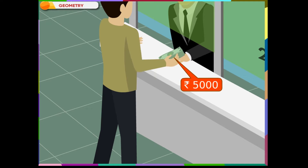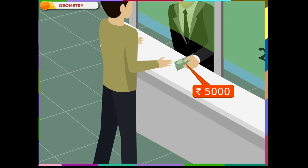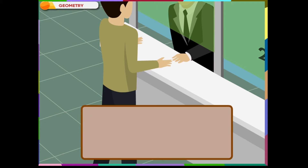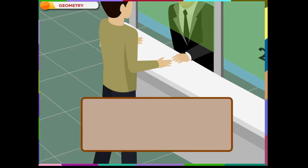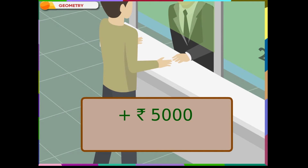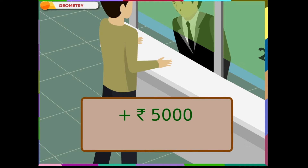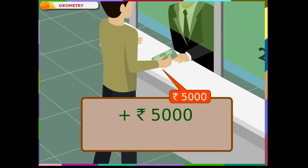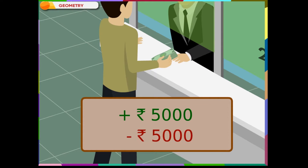Mr. Mohan deposits an amount of rupees 5,000 to his account. This amount gets added to his account — that is, plus 5,000. Mr. Mohan withdraws money from his account, so an amount of rupees 5,000 reduces from his account — that is, minus 5,000.